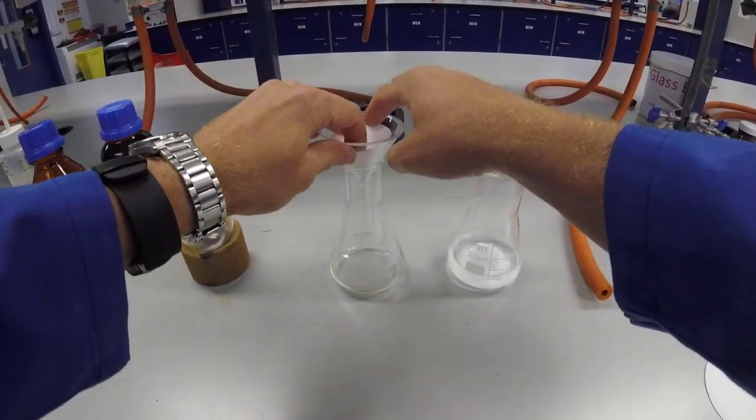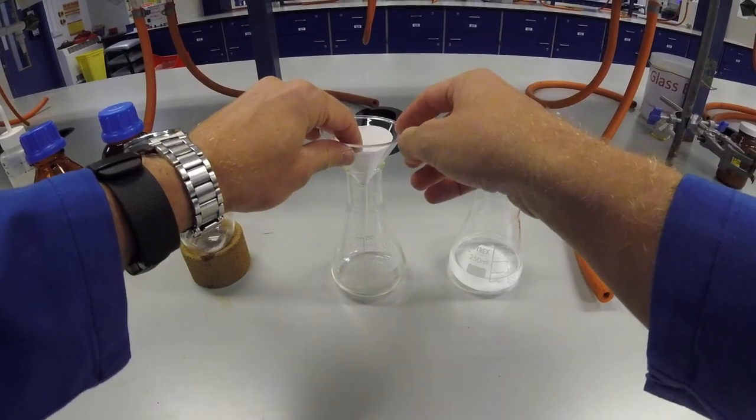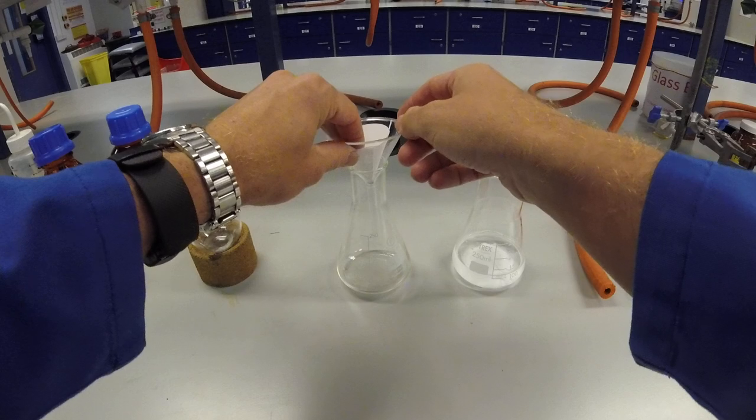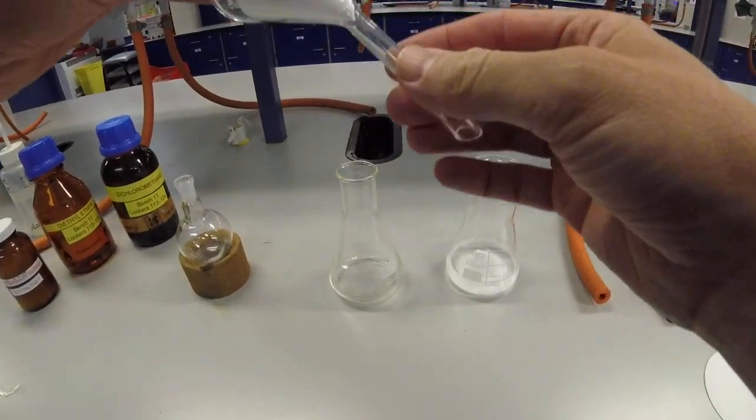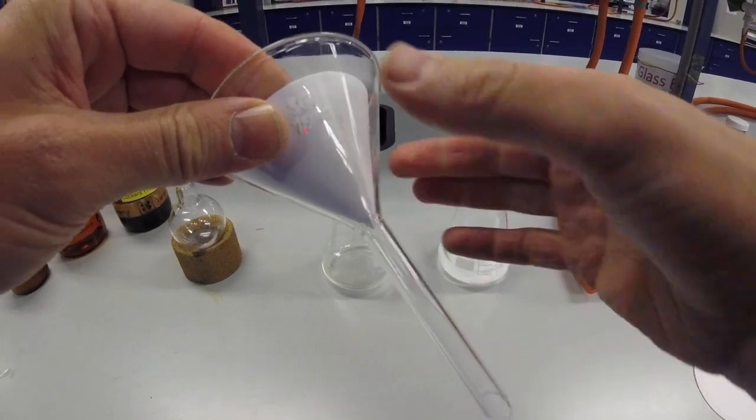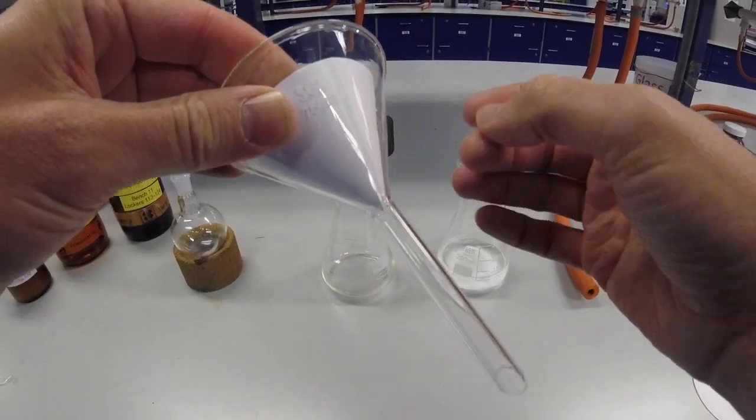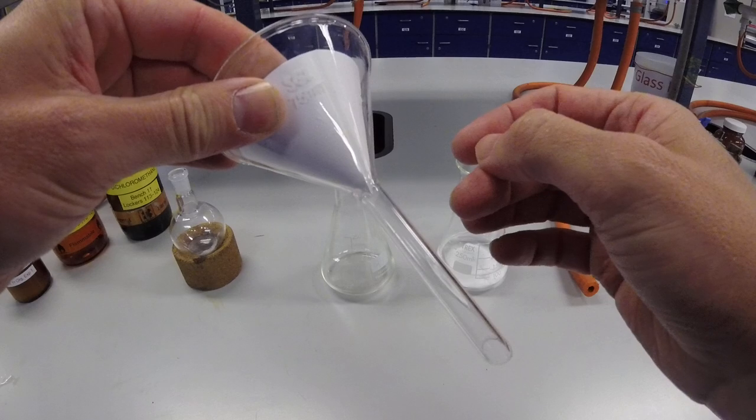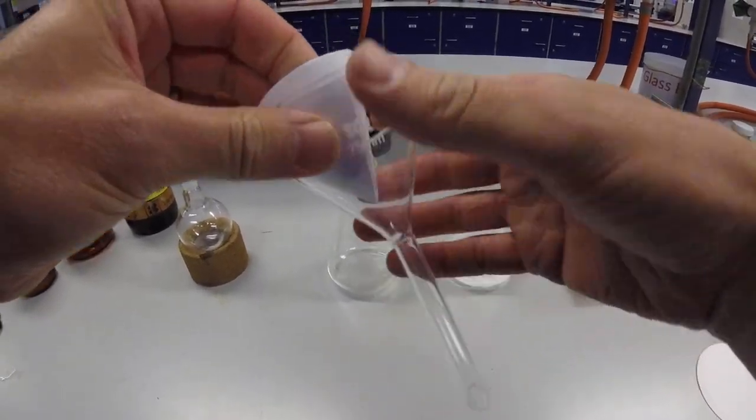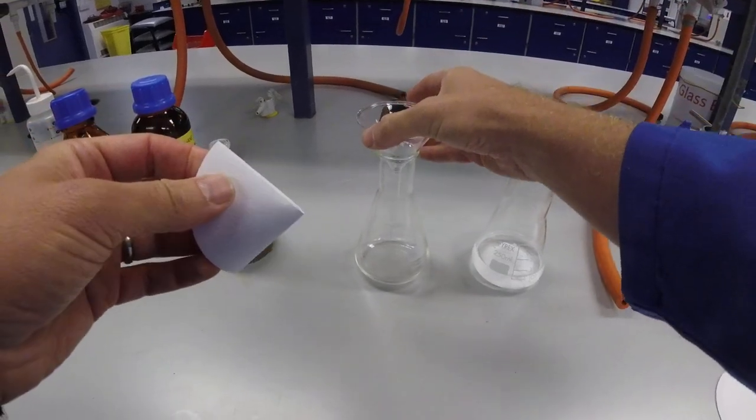And once that gets wet with the solvent and is in contact with the glass, it actually forms a seal. And so therefore you only actually end up filtering from this part here because all this is wetted and you're not properly filtering. So you only filter from here and it's incredibly slow and it's easy to get it blocked, which is where you need to learn how to flute a filter paper.